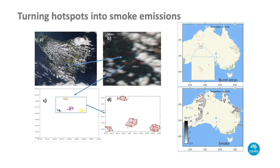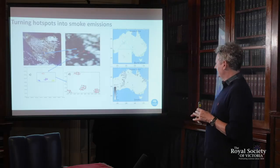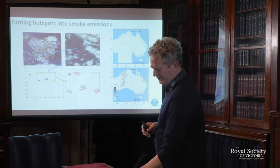We take the hot spots, the thermal anomalies which indicate fires, cluster them into local fires, determine an area that's being burned, and for that typical type of fire work out the emission rates. That information can then go into the model and we can forecast smoke from those fires. It gives us a chance for clear weather conditions to observe all fires burning across Australia and put them into the system to see where the smoke is going to go - done on a daily basis.